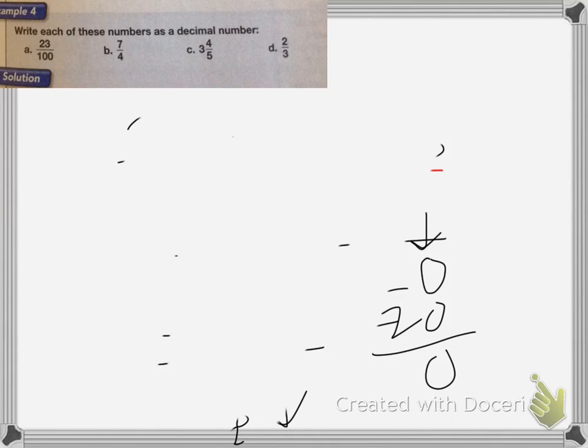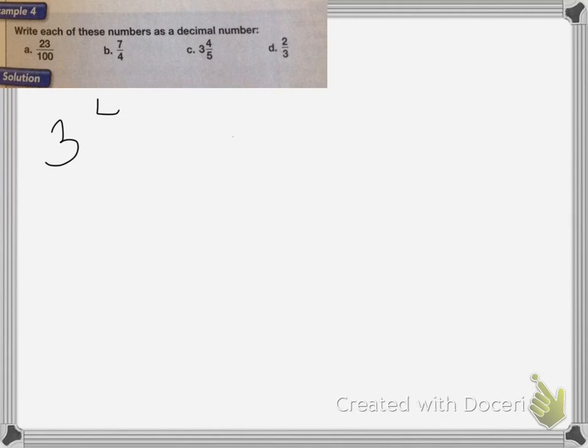Now for C, it's written in a mixed number, 3 and 4 fifths. So to change that to a decimal, I already know that the 3 is going to be in the whole numbers place, so it's going to be 3 point something.